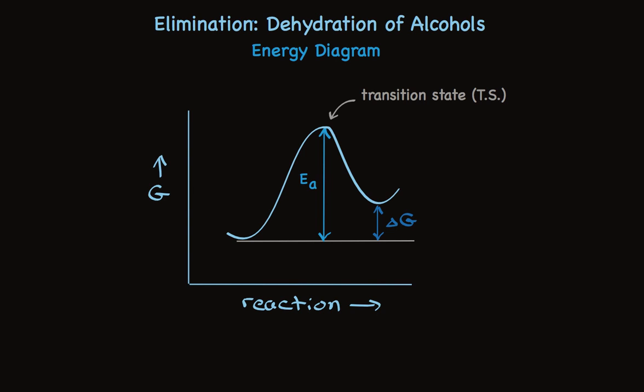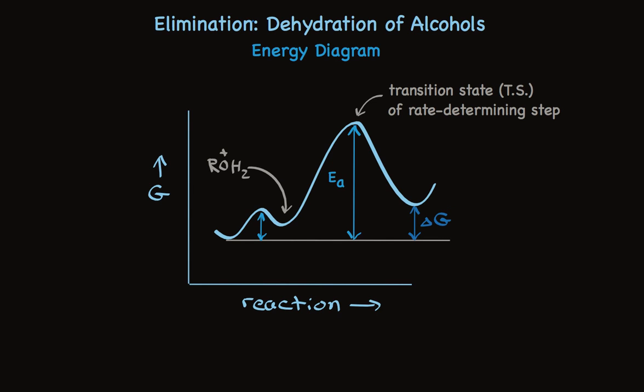In the dehydration of alcohols, we have an early protonation step that has a very low activation energy. Once that protonated alcohol is made, the energy diagram looks exactly like an E2 reaction. It is an E2 reaction.